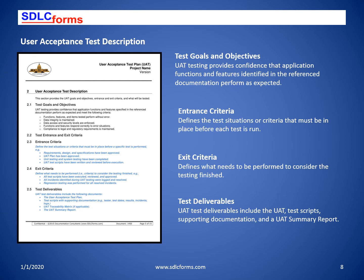The test goals include that all functions, features, and items tested perform without error. Data integrity is maintained and functions and features respond correctly to error situations. Entrance criteria examples are that the requirements, design data, specifications, and the UAT plan have been approved prior to execution. Exit criteria examples are that all test scripts have been executed, reviewed, and approved, and all incidences identified were logged and resolved.